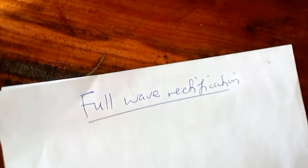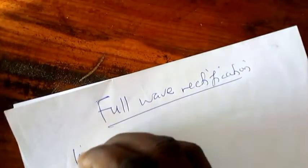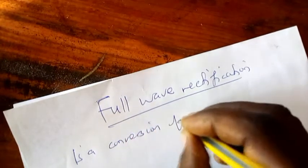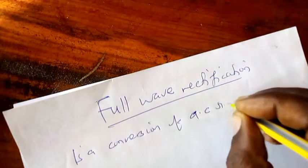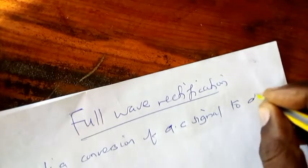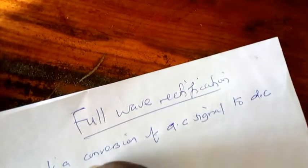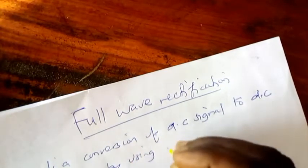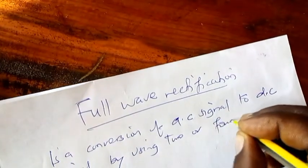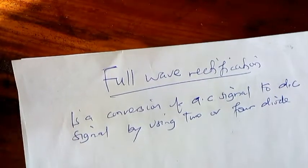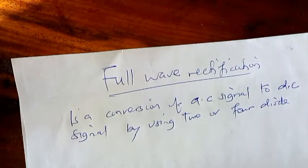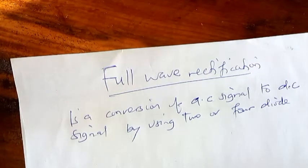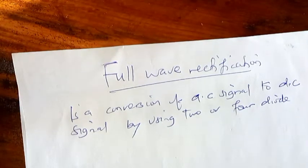Once we talk about full wave rectification, it means that it's a conversion of AC signal to DC signal by using two or four diodes. This is a way of converting alternative current to direct current. We're going to use two diodes or four diodes. When AC signal is allowed to flow in two diode or four diode, that's what we call full wave rectification.